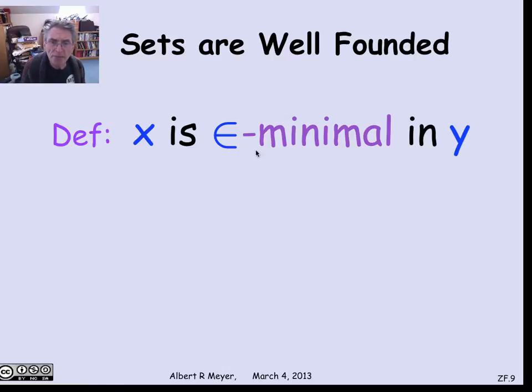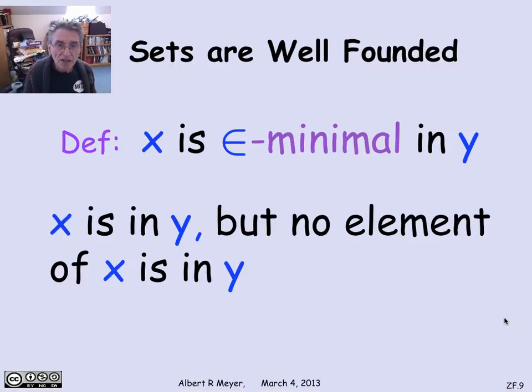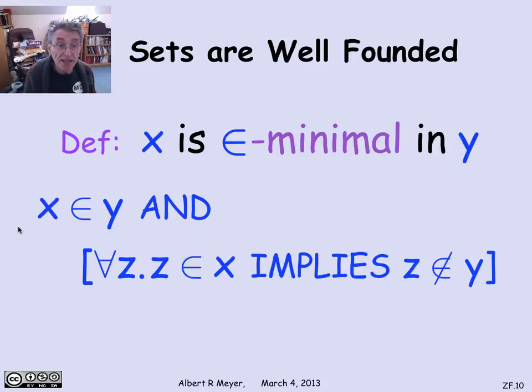Let me say that x is membership minimal, or ε-minimal, in y. It means x is a member of y, but there's no element of x that's also in y. In other words, x is built out of things not in y, but x itself is in y. So x comes before the other elements in y. To say this with a formula: x is in y and for every z, if z is in x, then z is not in y. That's the definition of x is membership minimal in y.